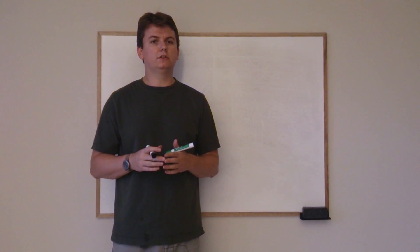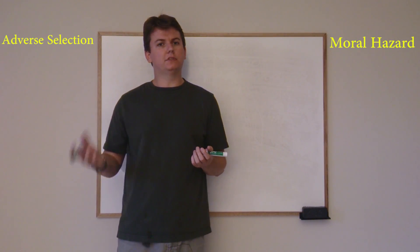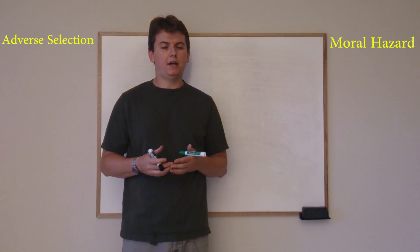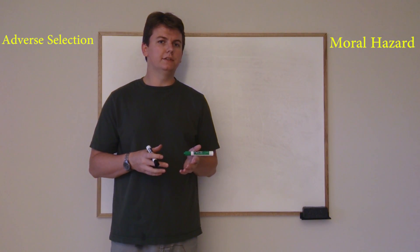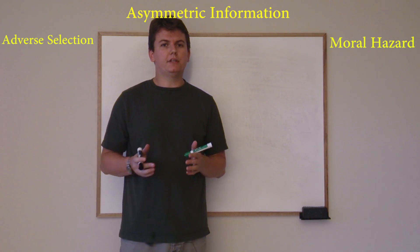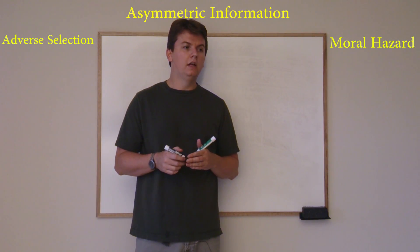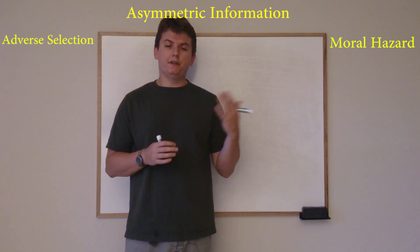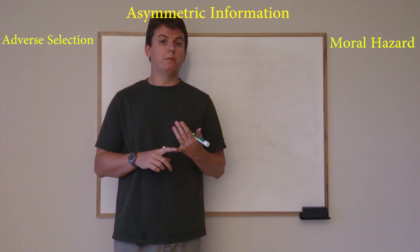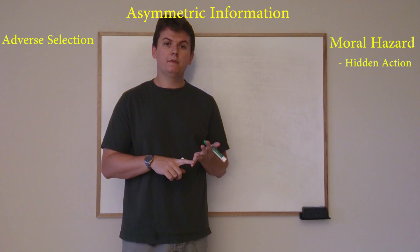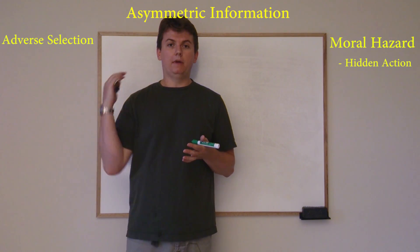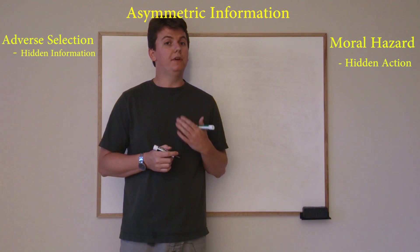But when we're in that world we also talk about moral hazard and adverse selection at the same time because both of them are a consequence of something called asymmetric information. So moral hazard, by the end of this you'll be able to tell that moral hazard is a problem of hidden action whereas adverse selection is a problem of hidden information.